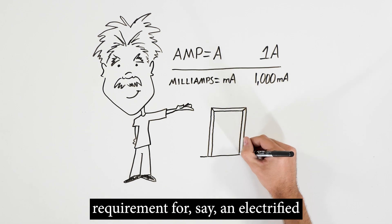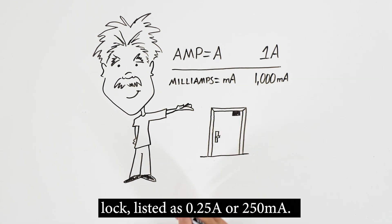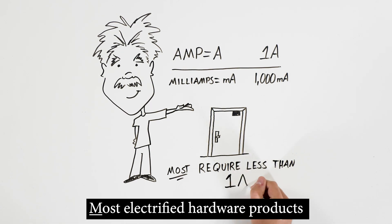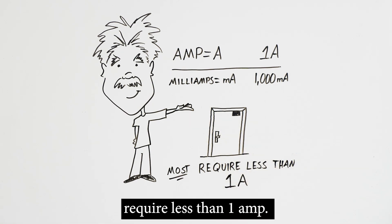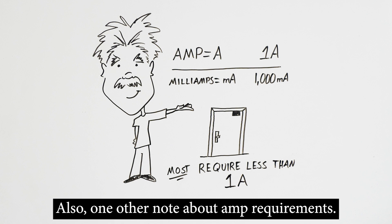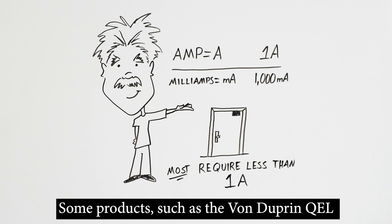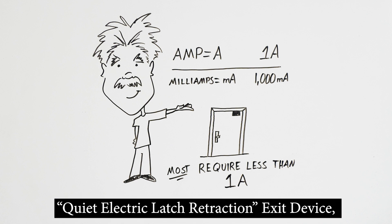You might see the amperage requirements for, say, an electrified lock listed as 0.25 amps or 250 milliamps. Most electrified hardware products require less than 1 amp. Also, one other note about amp requirements, some products such as the Von Dupren QEL, Quiet Electric Latch Retraction Exit Device, need some extra amperage initially.